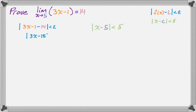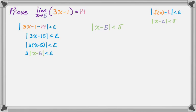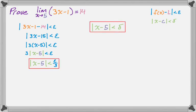I'm going to manipulate the epsilon inequality a bit — combine some things and factor out a 3. That gives us 3 times the absolute value of x minus 5, which matches the delta inequality. Dividing both sides by 3 gives the absolute value of x minus 5 is less than epsilon over 3. Comparing the two, I can let delta equal epsilon over 3, and now I'm ready to write the proof.